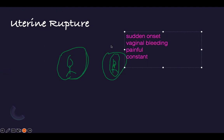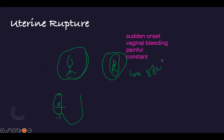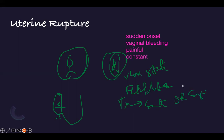The baby will lose station — the fetus has lost its station, which is bad. There is also fetal distress. The treatment is C-section right away — go to surgery and deliver the baby immediately. The uterus has ruptured, so they need to go to the OR for surgery.